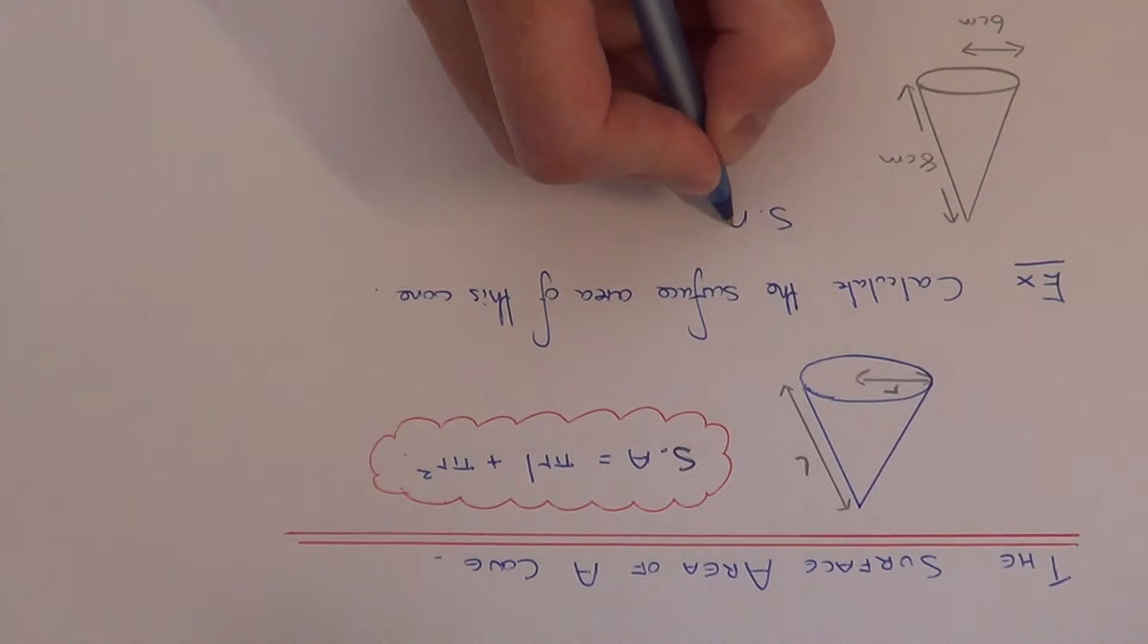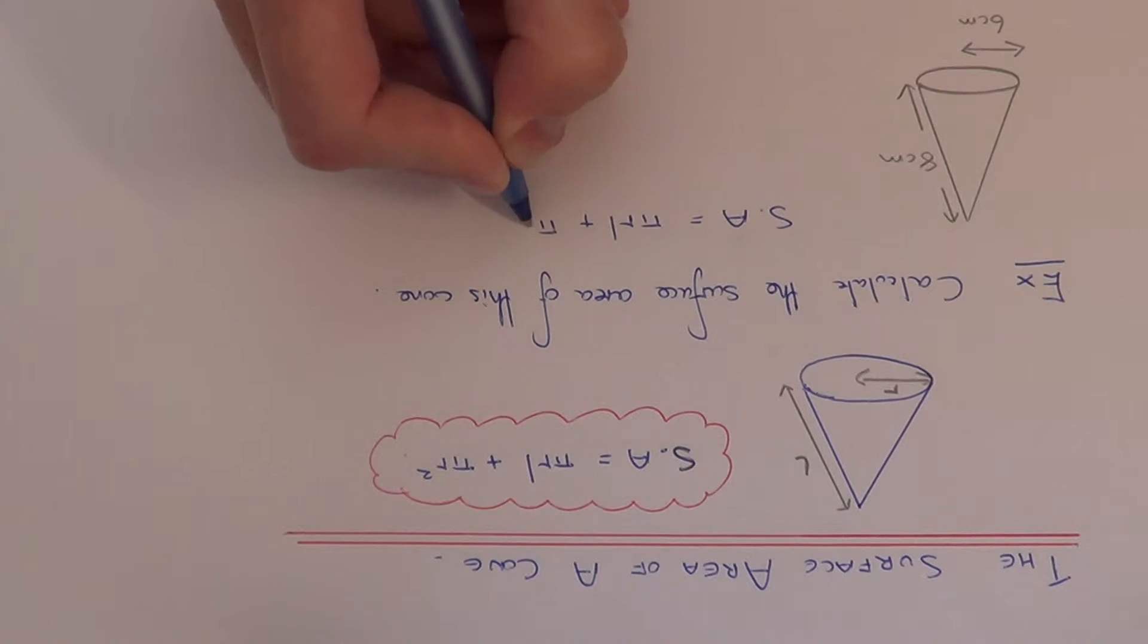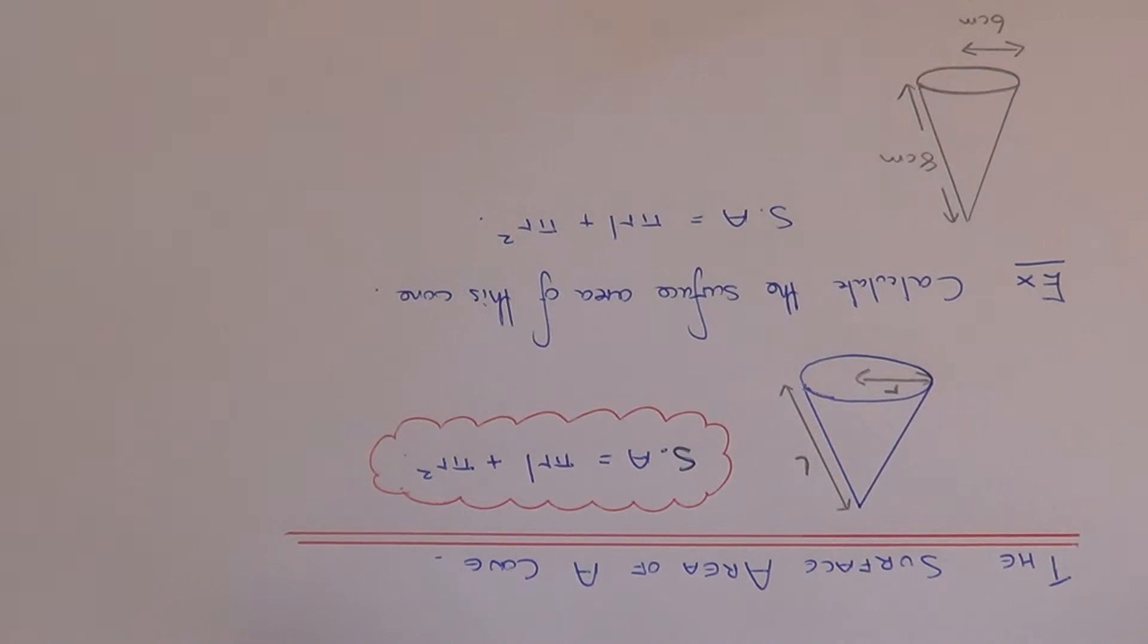So let me just copy down the formula one more time. We just need to substitute the radius and the sloping edge into the formula. So this is L and this is R.